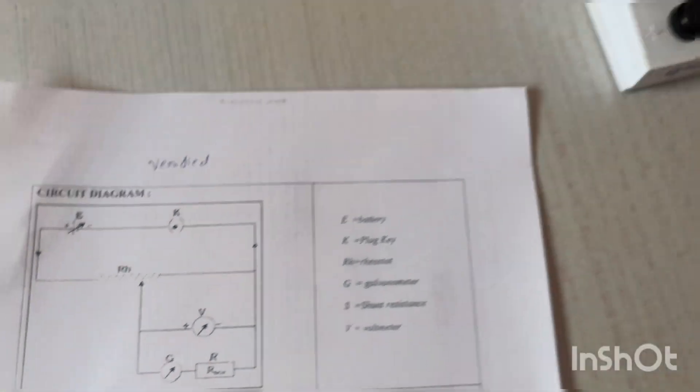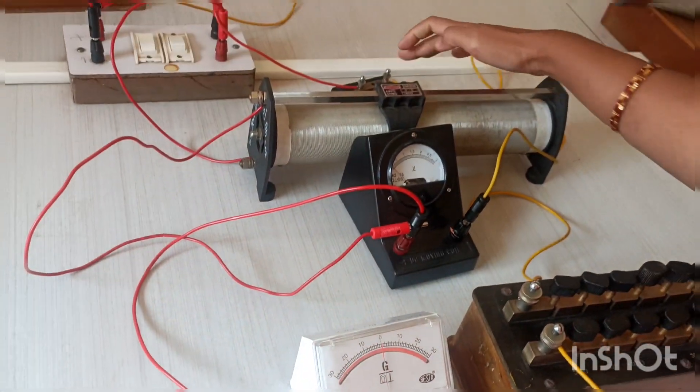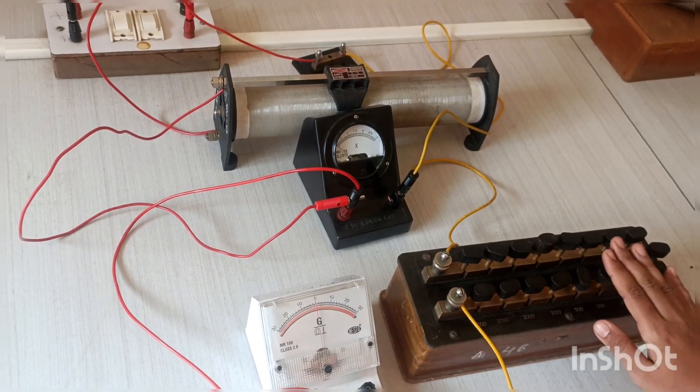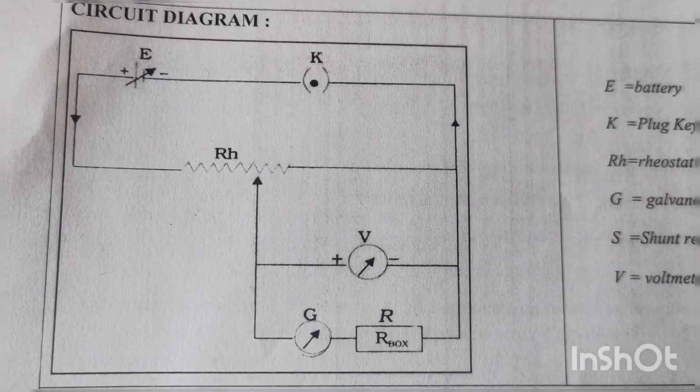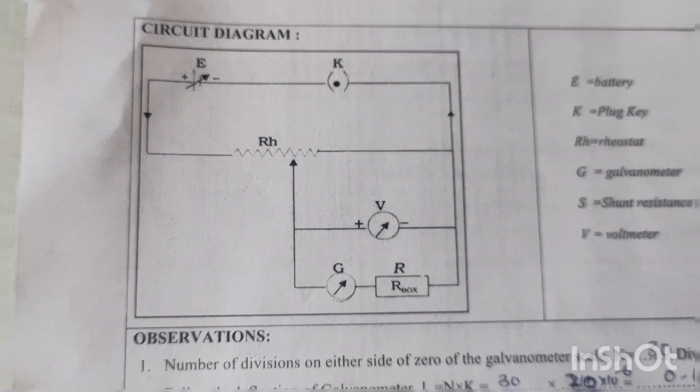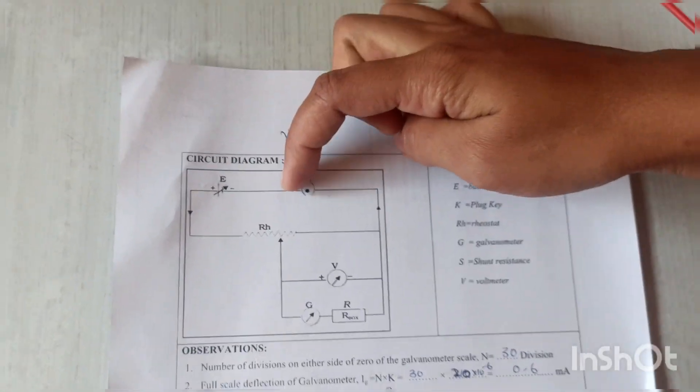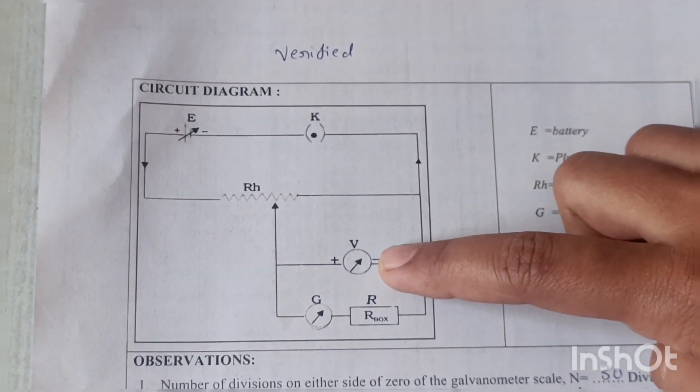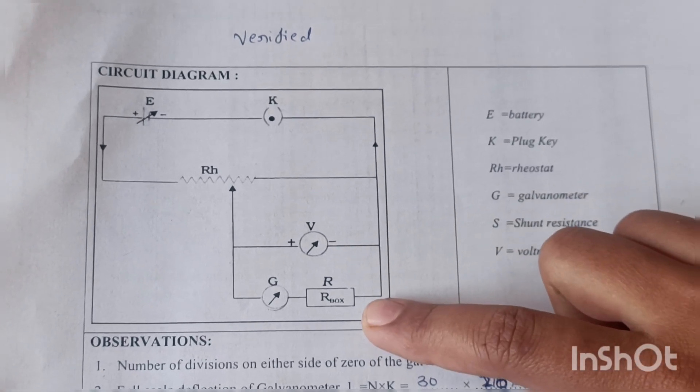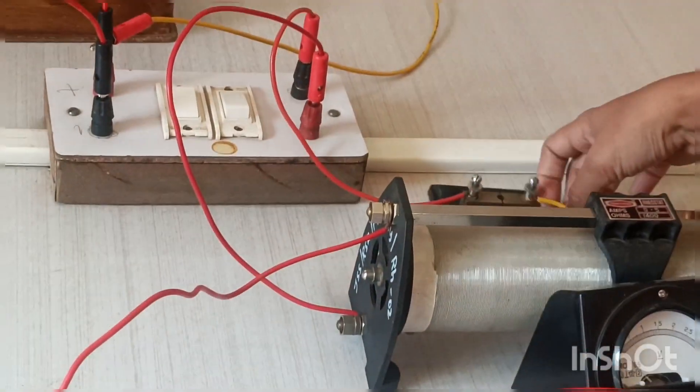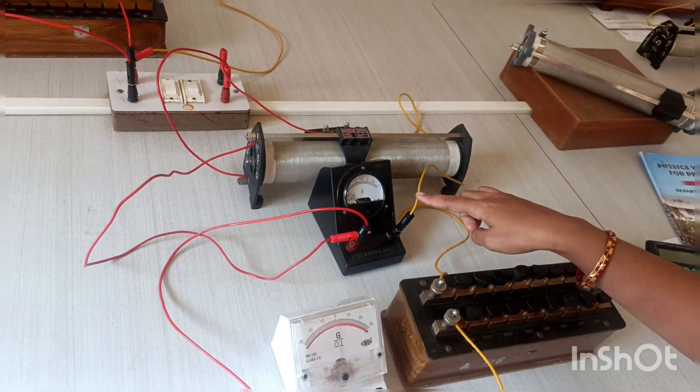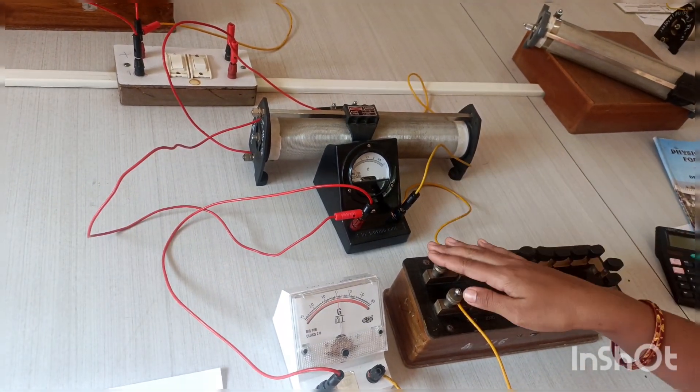Firstly, battery, key, rheostat, voltmeter, galvanometer, and resistance box. According to the circuit diagram, connect battery negative to key, key to rheostat lower terminal, lower terminal to voltmeter, voltmeter to resistance. Then voltmeter to resistance.